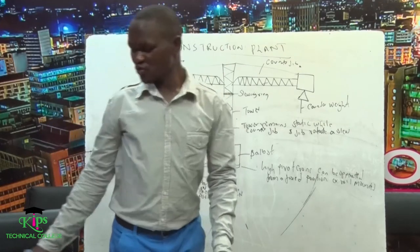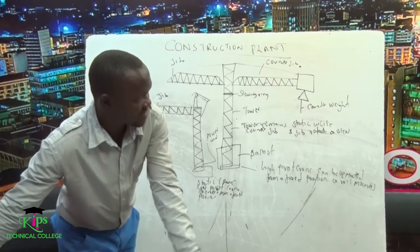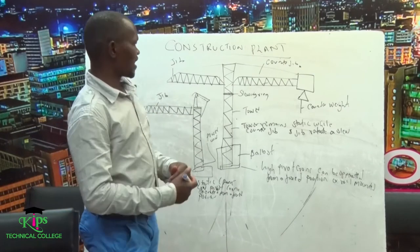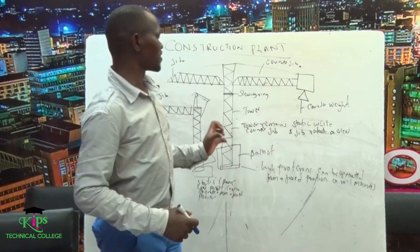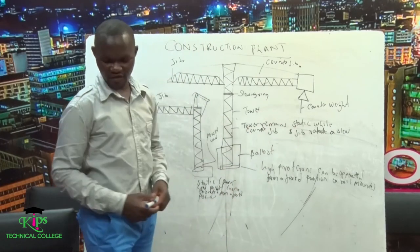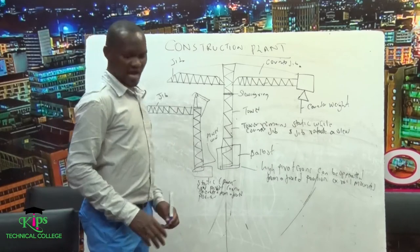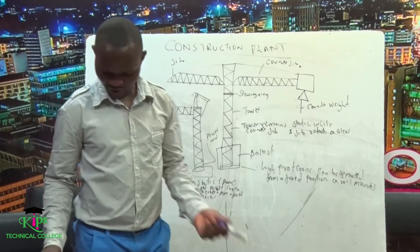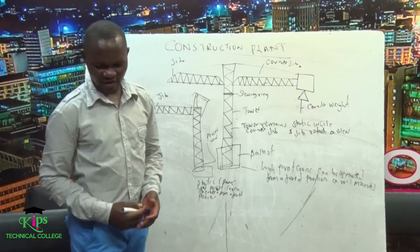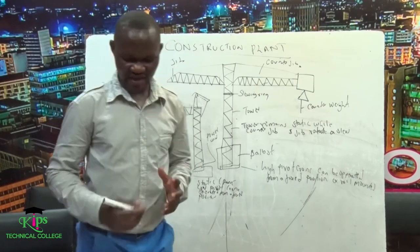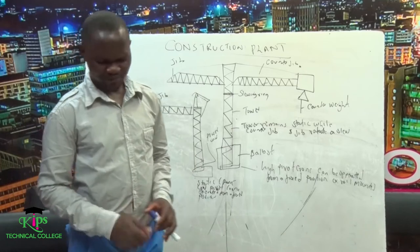In an exam, you can be asked with the aid of a sketch to explain different types of cranes. Since we have different types of cranes, we have the static cranes, the lorry-mounted cranes, then track-mounted cranes, and also self-propelled cranes.